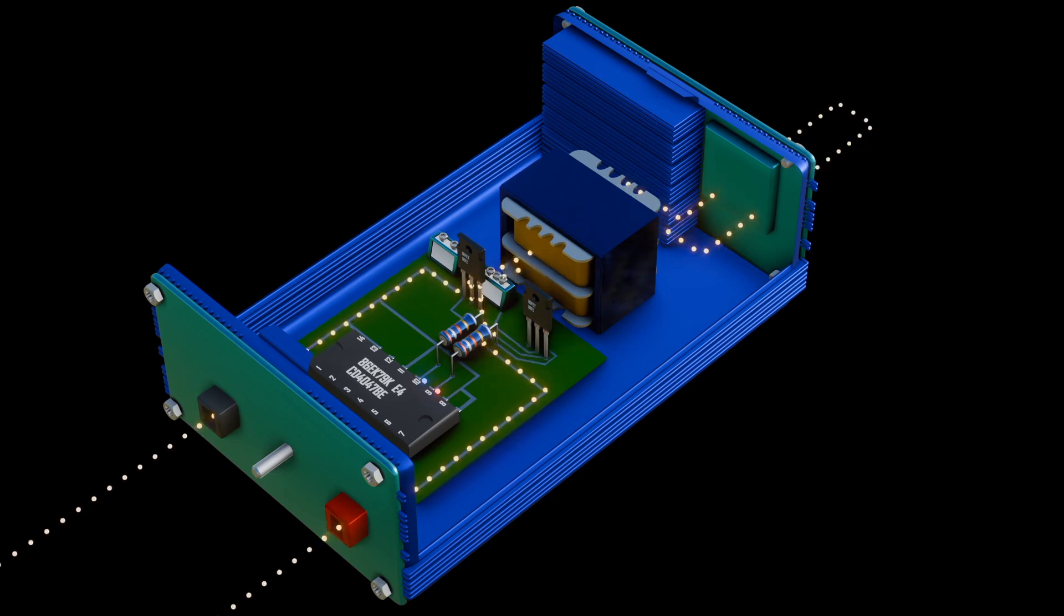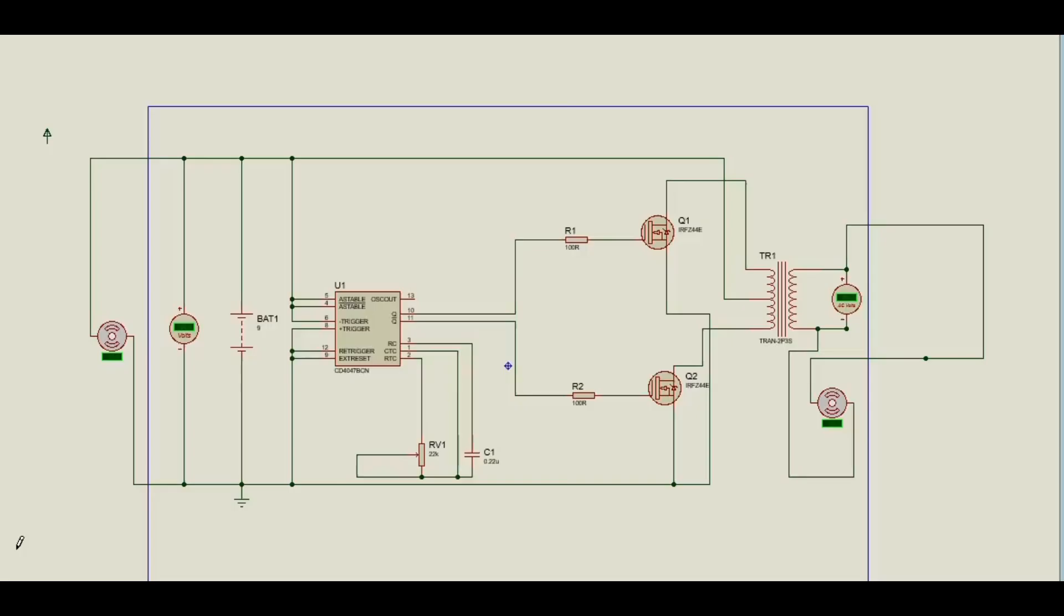Let's start with simulating the inverter project inside Proteus software. We have used several components such as integrated circuit CD4047, which is our controller. We have two resistors, two IGBTs, a transformer, a capacitor, a variable resistor, DC voltmeter and AC voltmeter, and also some motors to show the direction of current.